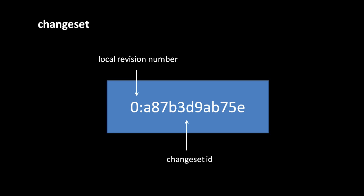Each change set is uniquely identified by a change set ID, which is generated as a SHA1 hash of the content of that revision. A SHA1 hash is 160 bits in length, and represented as hex is 40 digits long. Because a 40-digit hex number is pretty ugly, Mercurial will usually display these IDs abbreviated to their first 12 digits.